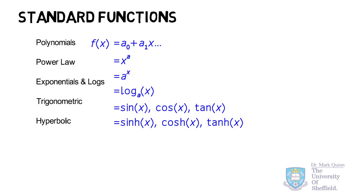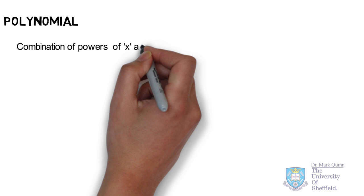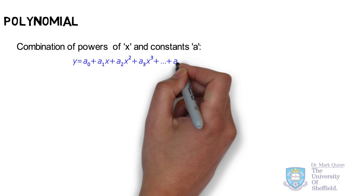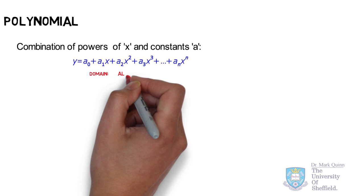Polynomials tend to be the simplest functions to solve and to analyze. They're essentially combinations of powers of x, the coefficients that go along with those powers, and constants. The generalized form of a polynomial is an ever-increasing series of powers of x with coefficients a and constants such as a₀. The domain of polynomials tends to be all real numbers, between minus infinity and plus infinity.